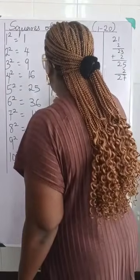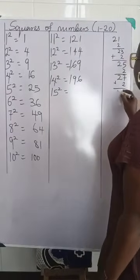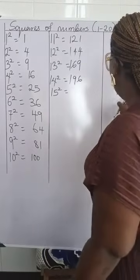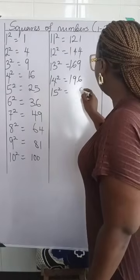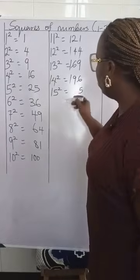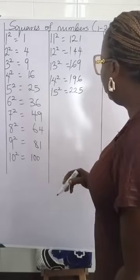Then 15 squared will have plus 2 here and we'll have 29. 29, you add it to 196. 9 plus 6 is 5. Carry 1. 10 plus 2 is 12. 2. And also carry 1 and put it here, which is 225.